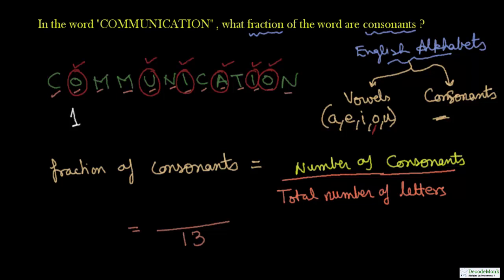So we can see that out of total 13 letters in the word, we have got 1, 2, 3, 4, 5, 6, 6 vowels. So we have 13 minus 6 is 7 consonants, 7 consonants are there.